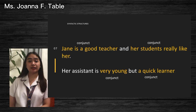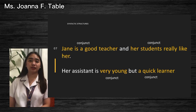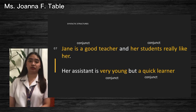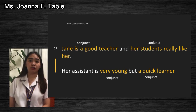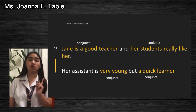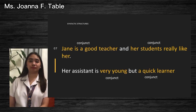The second example is: 'Her assistant is very young, but a quick learner.' In this example, 'very young' and 'a quick learner' are considered conjuncts.